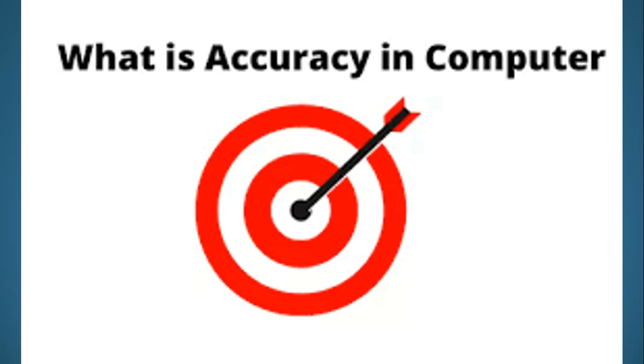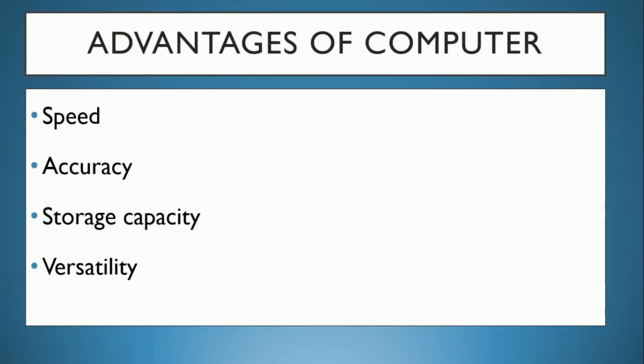If we give the wrong command, the mistake is ours. Storage capacity — it has very high storage capacity in its hard disk, now available up to 1 TB. Versatility — it can do multi-tasking. A person can do only some tasks, but on a computer we can watch videos, learn something, and listen to audio.